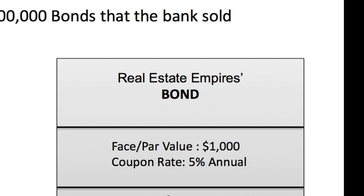Let's look at the par value, also known as the face value. This is simply the dollar amount that the bond was originally issued for, which is $1,000. So in order for Jesse to buy this bond, he'd have to pay $1,000. And that's also the amount of money Jesse is going to receive whenever the bond becomes mature.